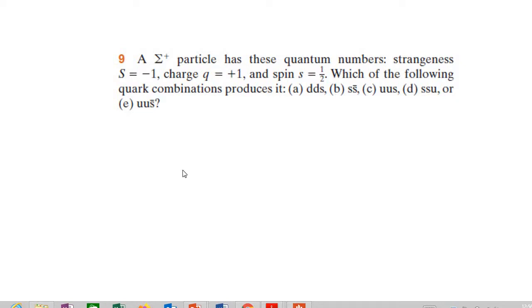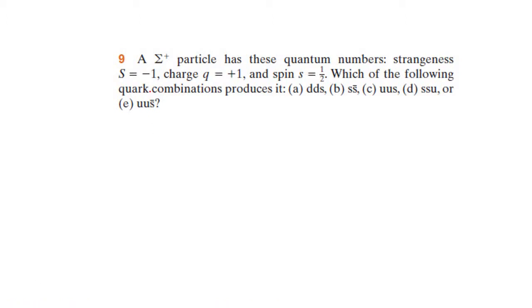Assalamualaikum and hi. Today we're going to be solving a question about quarks composition. Let's take a look at the question. A sigma plus particle has these quantum numbers: strangeness negative 1, charge positive 1, and spin 1 over 2. Which of the following quark combinations produces it?